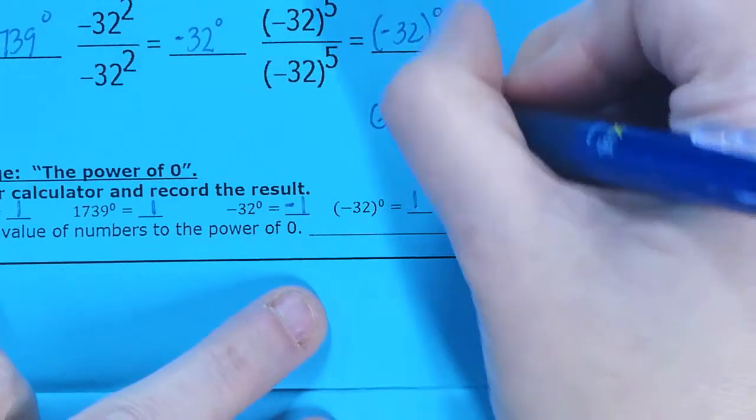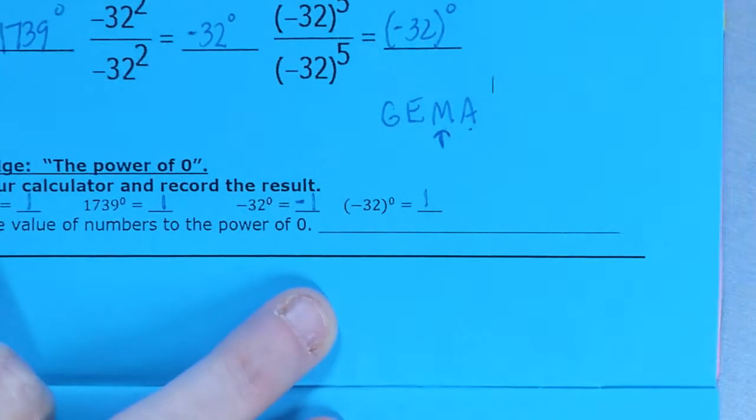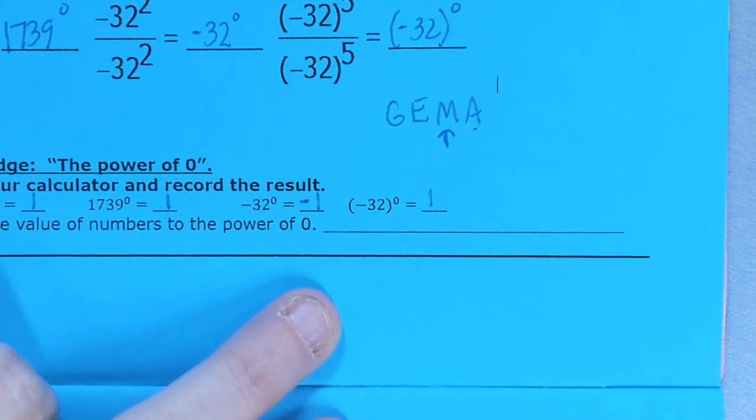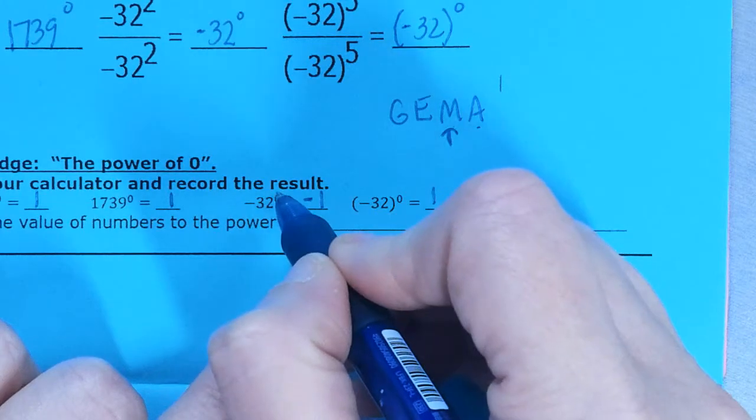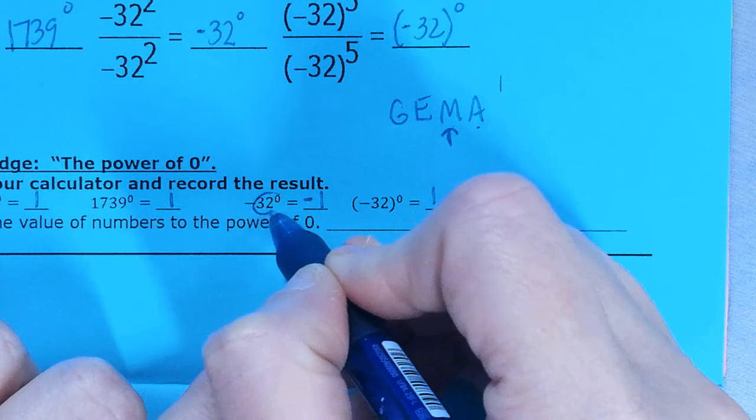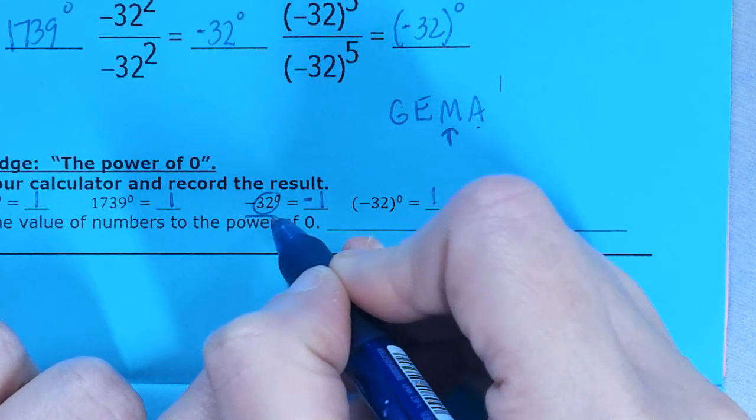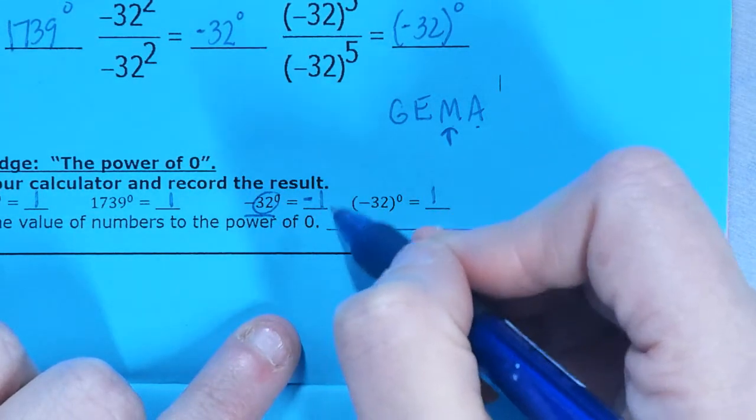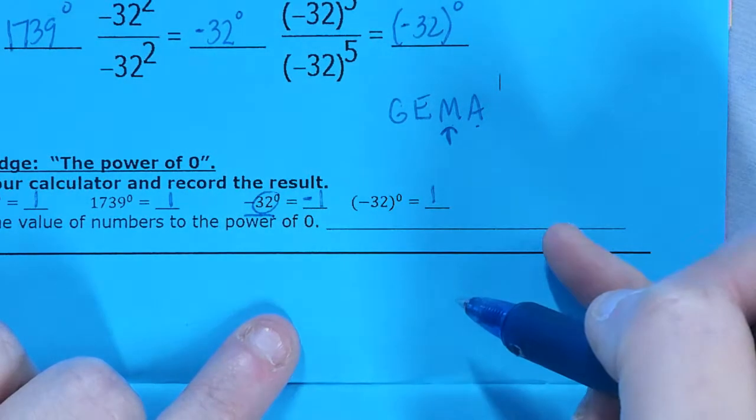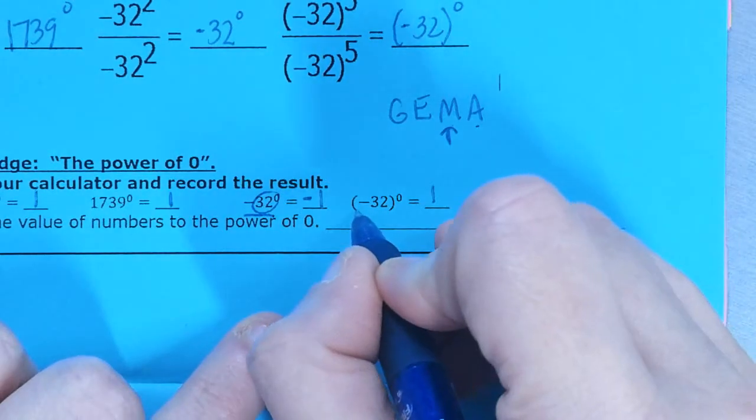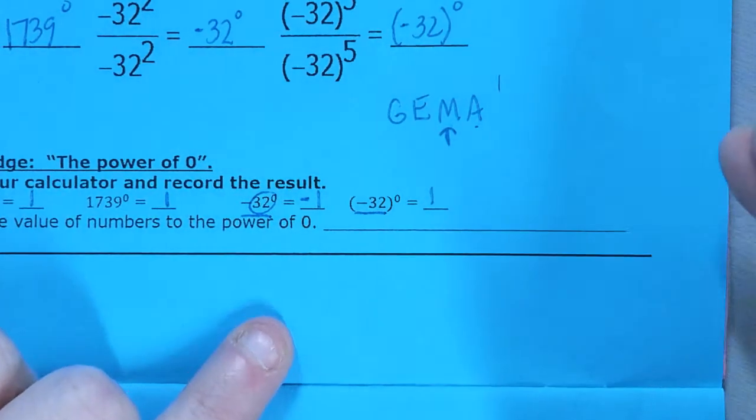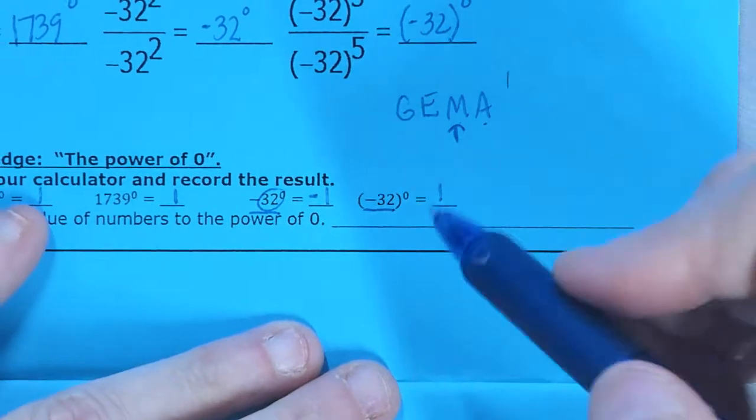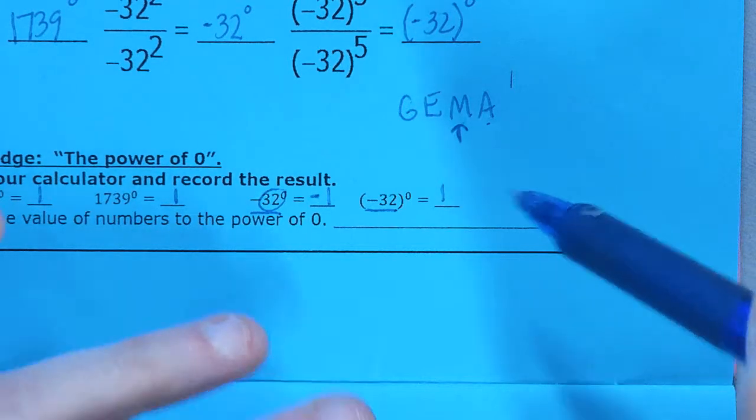Flipping the sign is considered a multiplication operation, because we flip the sign by multiplying by negative 1 or dividing by negative 1. So if I look at this from a purely order of operations standpoint, it's going to raise 32 to the 0 power first, and then it's going to flip the sign. So it's saying 32 to the 0, that's 1. What's the opposite? Negative 1. This one, everything is inside the parentheses. So it's raising all that stuff to the 0 power at the same time.